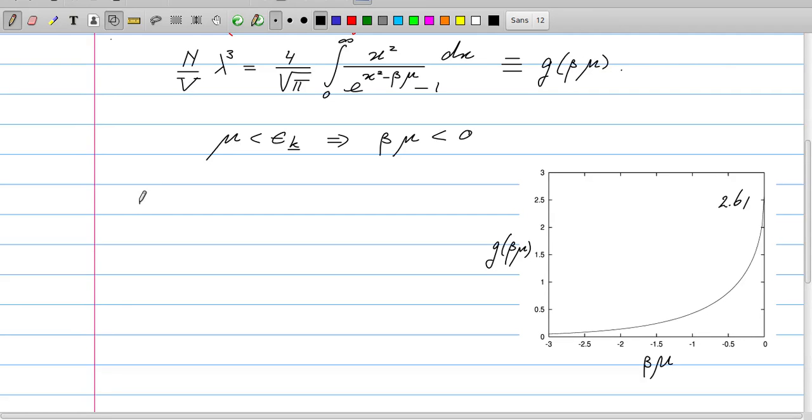So the maximum density appears to be the maximum value of g(βμ) divided by λ³. So this thermal wavelength defines a volume, and I cannot put more than 2.61 particles in a box of λ × λ × λ.